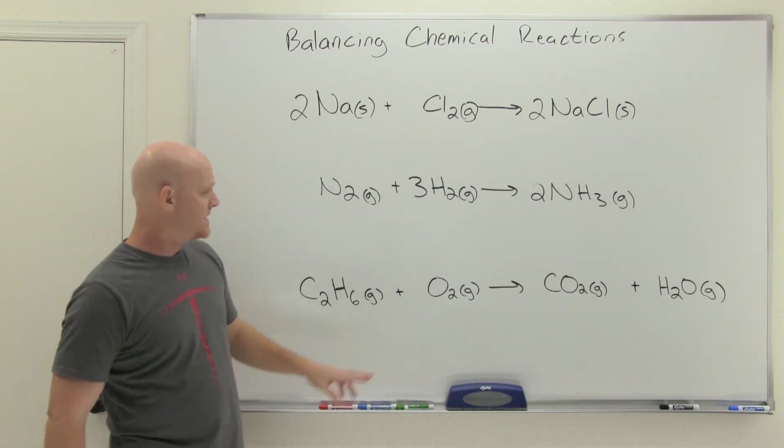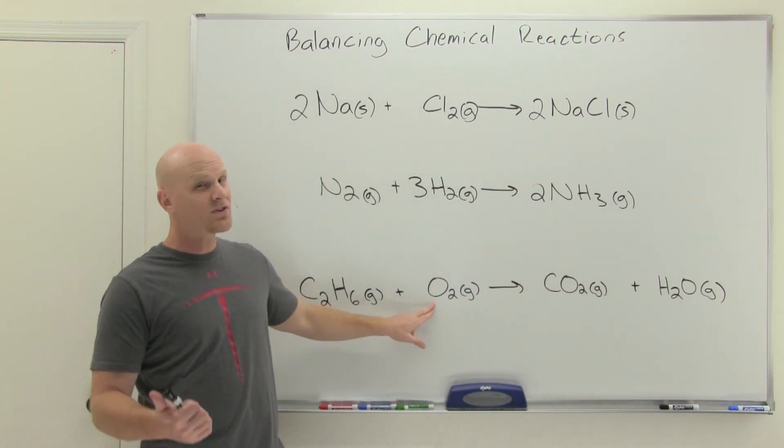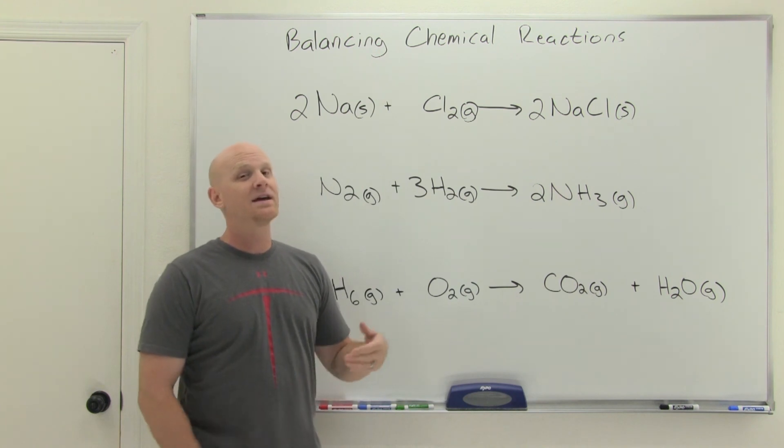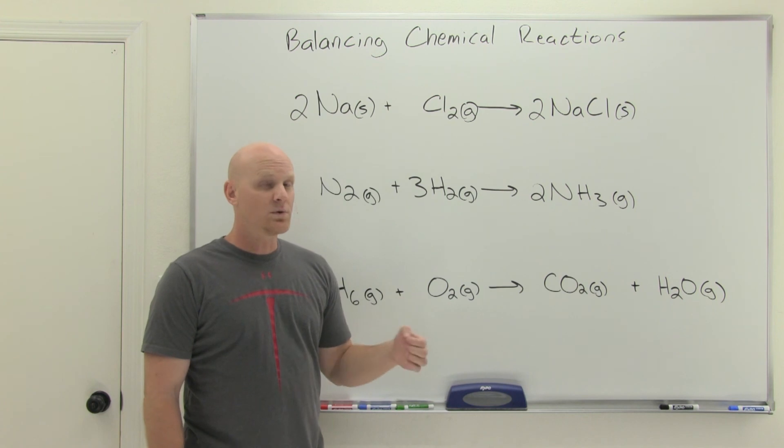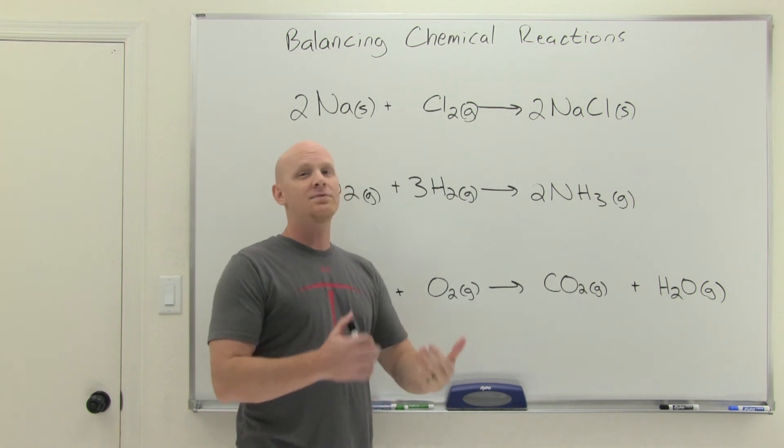But oxygen, unfortunately, shows up in two places on the product side. Now only one place on the reactant side, and that's good. But showing up in more than one place on the same side of the reaction means it's going to be a pain in the butt to balance. If we started balancing this out with oxygen, it would be nearly impossible to come out with the right answer. You'd find out that you just keep going back and forth, and you can never get it to work out right, and life would suck.